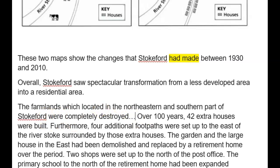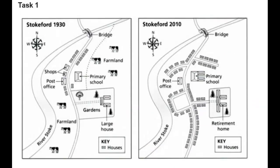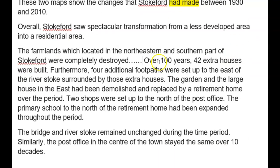And what's in their place? They have been completely destroyed and replaced by a residential unit — by houses. Over the period, well it's not 100 years, careful it's 80, 42 extra houses have been built. Furthermore, four additional paths have been added or have been established to the east of the River Stoke, which surround these extra houses.